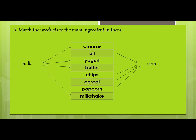So cheese, yogurt, butter, and milkshake are matched with milk, and the rest — oil, chips, cereal, and popcorn — are matched with corn. This is the match-the-column exercise from your book.